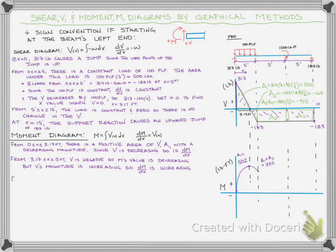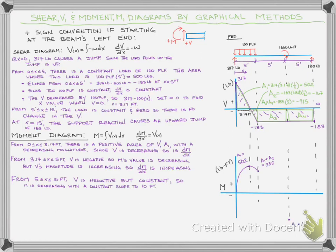A2 is a negative area, so our moment value is going to be decreasing. We can plot our point: A1 plus A2 gives us 335. The magnitude of shear is increasing — we go from 0 to 183 in magnitude — so we need an increasing slope; it's going to get steeper as we go. Then when we add in A3, that is negative, so it's going to decrease our moment value, but it is constant shear. When we get our point at 10 feet, which is A1 plus A2 plus A3 equal to negative 580, we're going to have a constant slope — a linear slope.